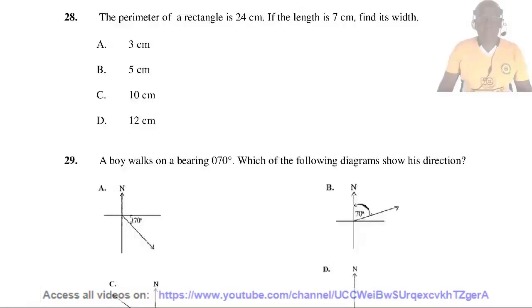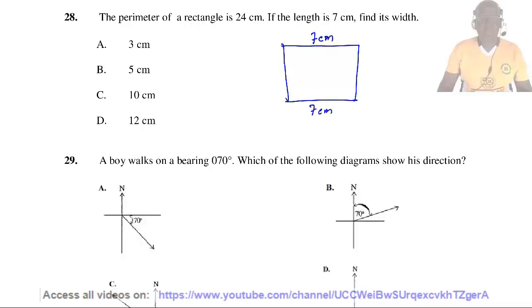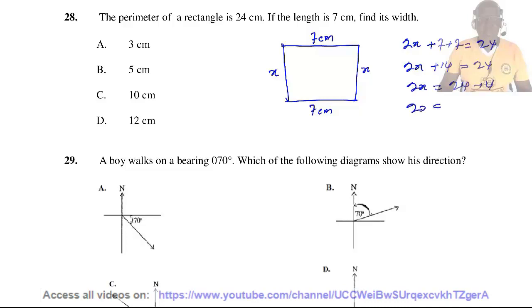Question 28. The perimeter of a rectangle is 24 centimeters. If the length is 7 centimeters, find its width. Drawing a rough sketch: both lengths are 7 cm, and let the width be S on each side. The perimeter equation gives 2S plus 7 plus 7 equals 24. So 2S plus 14 equals 24, meaning 2S equals 10, giving S equals 5. The answer is B.